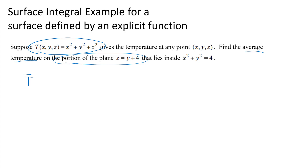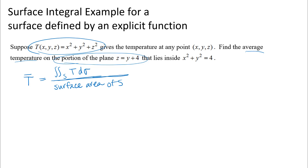So T-bar is going to be the sum of the temperature function — that's what our definite integral represents on the surface — divided by the size of the surface, which in this case is the surface area of our surface S. We might be able to just write down the surface area if it's a surface we know, or we could use a surface integral to calculate it, integrating D sigma — adding up all those little surface area pieces.